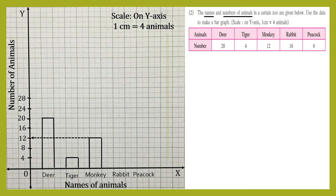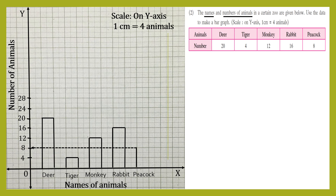Number of rabbits are 16, so first vertical line, second vertical line — both at a height of 16 — and we join these vertical lines with a horizontal line using scale and pencil. Let's check the height: it's 16. Next, number of peacocks are 8, so we draw a vertical line till 8, one more vertical line till 8, and join both end points with a horizontal line using pencil and scale. The height is 8.